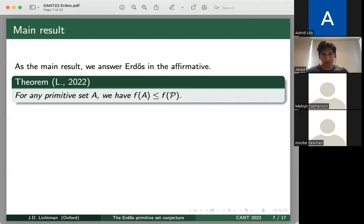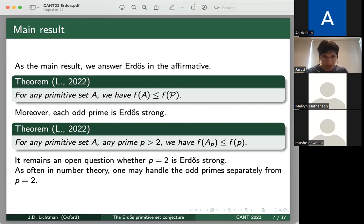Nevertheless, as the main result of this talk, we are able to answer Erdős's question in the affirmative. So for any primitive set A, we have that f(A) is bounded by f of the primes. And moreover, in the course of the proof, we're able to show that every odd prime is Erdős strong. So that is to say, for any primitive set A and any prime at least three, we have that f(A_P) is at most f(P). However, it does remain an open question whether or not P equals 2 is Erdős strong. So in other words, it's still an open problem whether any primitive set A consisting of only even numbers, we have that f(A) is bounded by 1 over 2 log 2. So this is a very concrete question that's still open.